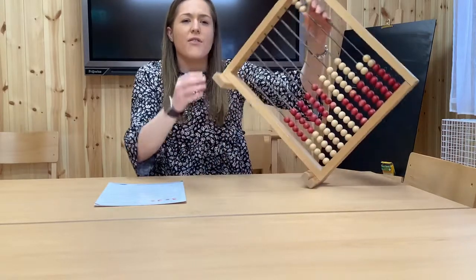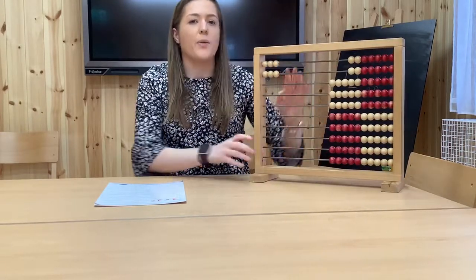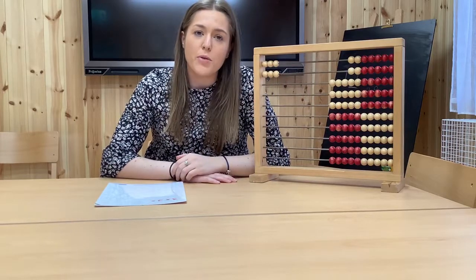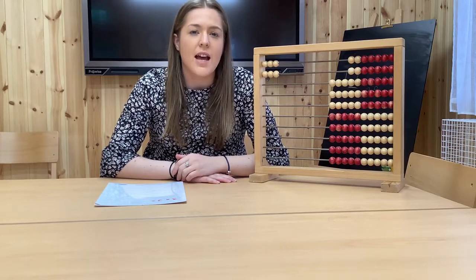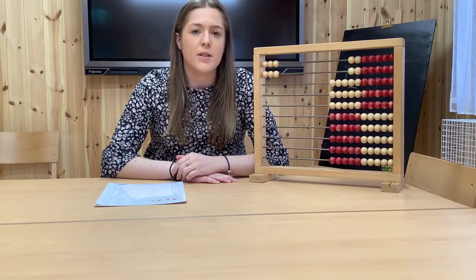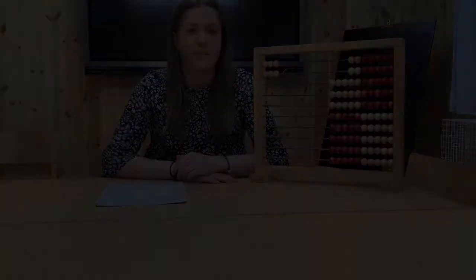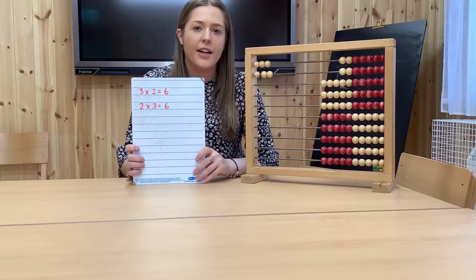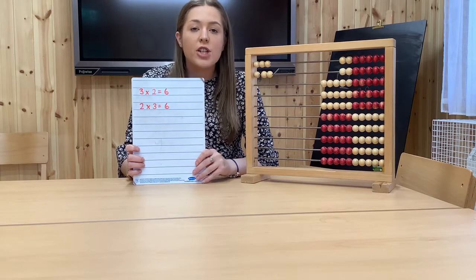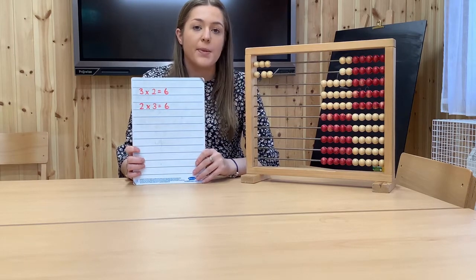So that means I've got 2 multiplication equations. I've got 3 multiplied by 2 equals 6, and 2 multiplied by 3 equals 6. And that's just like the relationships that we looked at in maths yesterday. So now we've got these 2 multiplication equations from the array. But there's also 2 division equations we can find with the array as well.